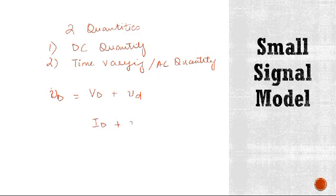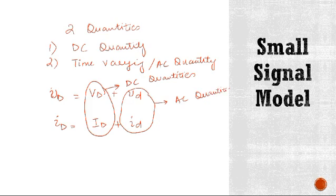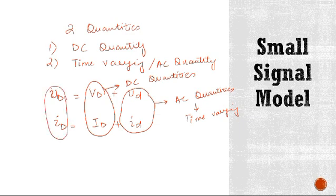Here, terms written in uppercase with uppercase subscripts represent DC quantities. Terms written in lowercase with lowercase subscripts represent AC or time-varying quantities. Total instantaneous quantities are written in lowercase with uppercase subscripts. Instantaneous quantities are those measured at a particular instant and equal the DC value plus the time-varying component.